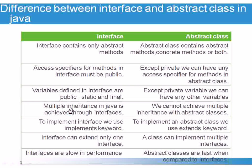Fourth difference: We can achieve multiple inheritance in Java through interfaces. In an abstract class, we cannot achieve multiple inheritance.